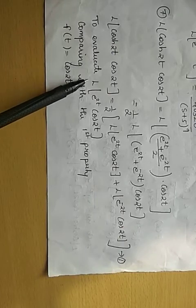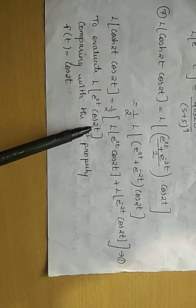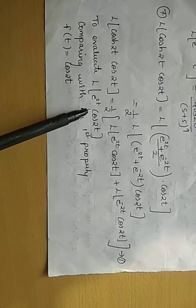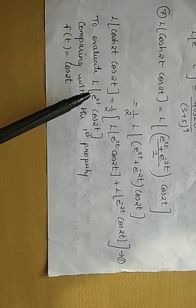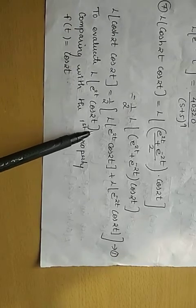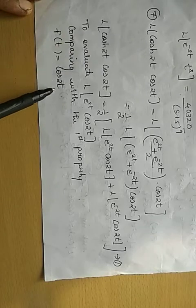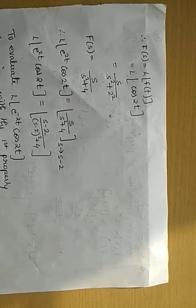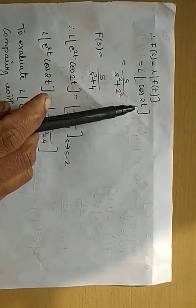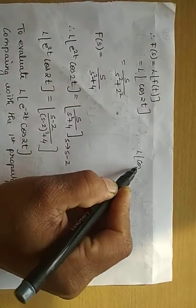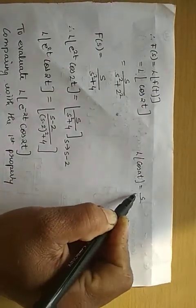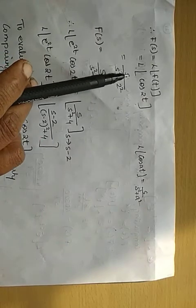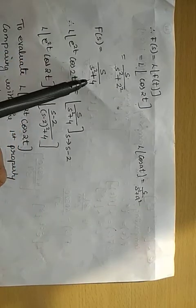First, evaluate the Laplace transform of e raised to 2t into cos 2t. This is in the standard form of the first shifting property: Laplace transform of e raised to at into f(t). Comparing, f(t) is cos 2t. We need f(s), which is the Laplace transform of cos 2t. Using the standard formula, Laplace transform of cos(at) equals s divided by s squared plus a squared, so Laplace transform of cos 2t equals s divided by s squared plus 4.